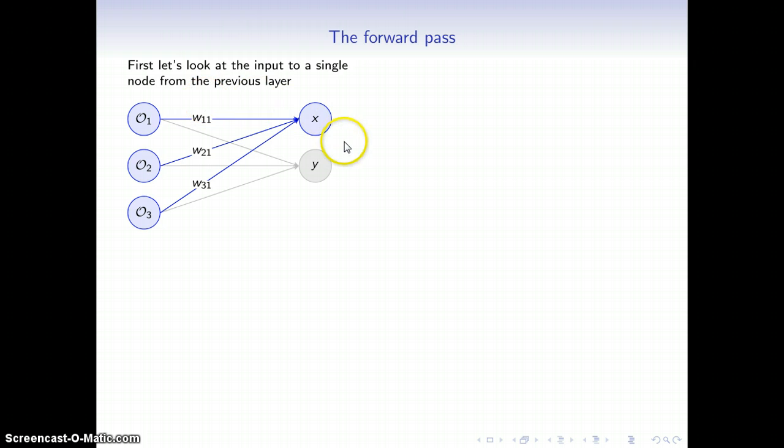So let's just look at the input to a single node from the previous layer and consider this one step at a time. So I'm looking at the input to this node here. I'll denote it with x and I have the output of the previous layer's nodes here with O sub 1, O sub 2, O sub 3 connected by weights to the input x by the weights from 1 to 1, the weights from 2 to 1, and the weight from 3 to 1.